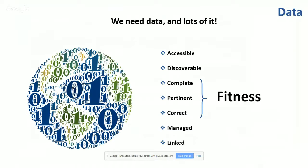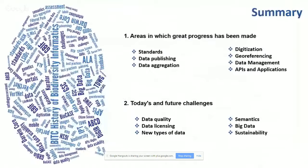The characteristics we seek of data are that they be accessible, discoverable, complete, pertinent, correct, managed, and linked. There is a concept of fitness for use or fitness for a purpose — where the key characteristics are that the data be complete, pertinent for the use you're trying to put them to, and correct. This will play out later when we talk about data quality. I'll divide my talk into areas of great progress and then current ongoing challenges.